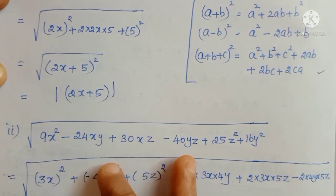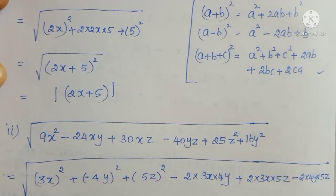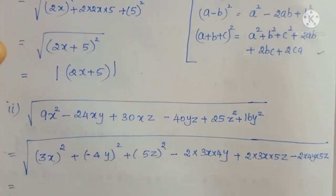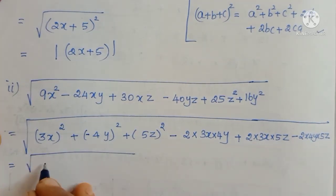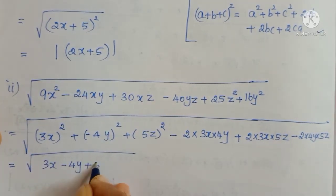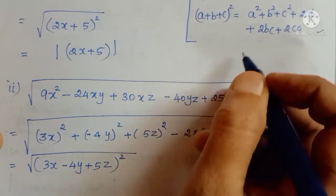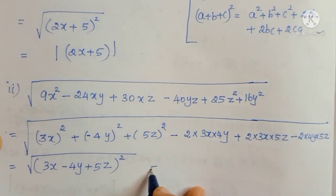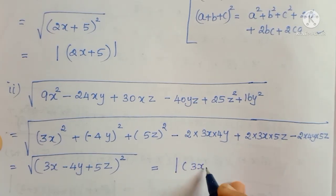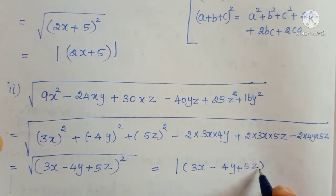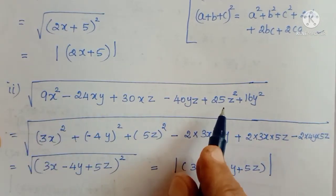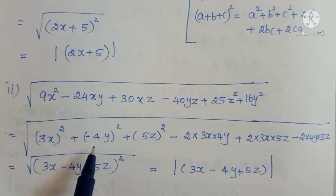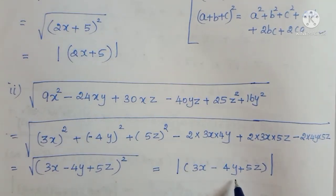The variable with the negative sign is identified, and the remaining terms have no minus sign fixed. Now this expression we write as square root of 3x minus 4y plus 5z, the whole squared. The square root and the square cancel, so we get modulus of 3x minus 4y plus 5z. That is the square root of the given expression. In sums where a variable is negative, identify the common variable — that variable only gets the negative sign, and we write the values in the formula concept.